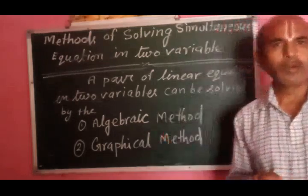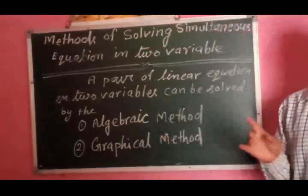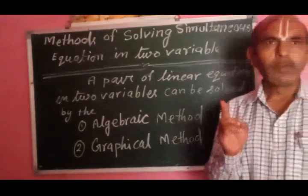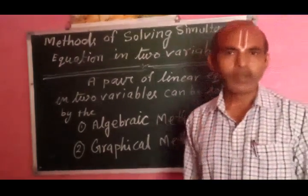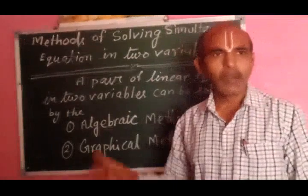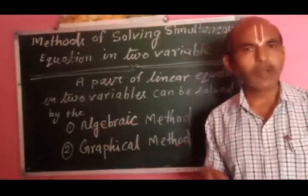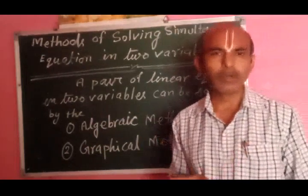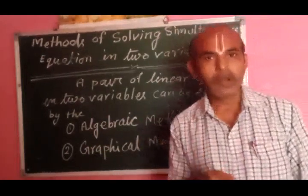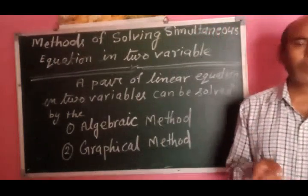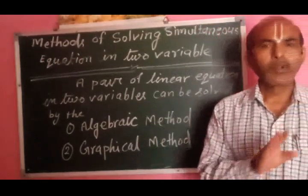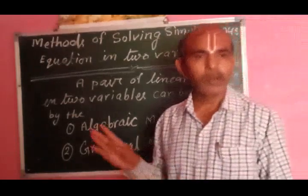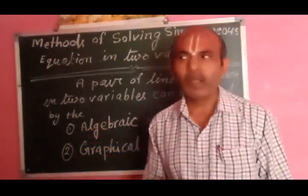If A1 upon A2 is not equal to B1 upon B2, तो आप unique solution प्राप्त करेंगे. If A1 upon A2 equal B1 upon B2 is not equal C1 upon C2, तो no solution. If A1 upon A2 equal B1 upon B2 equal C1 upon C2, तो many solutions.